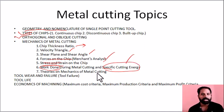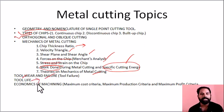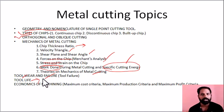Then we have theories of metal cutting, which is important. Next is tool wear: flank wear and crater wear — tool wear failures are important. Then tool life using Taylor's tool life equation, followed by problems. The modified Taylor's tool life equation and its rendering are very important, with high chances of problems appearing in exams.